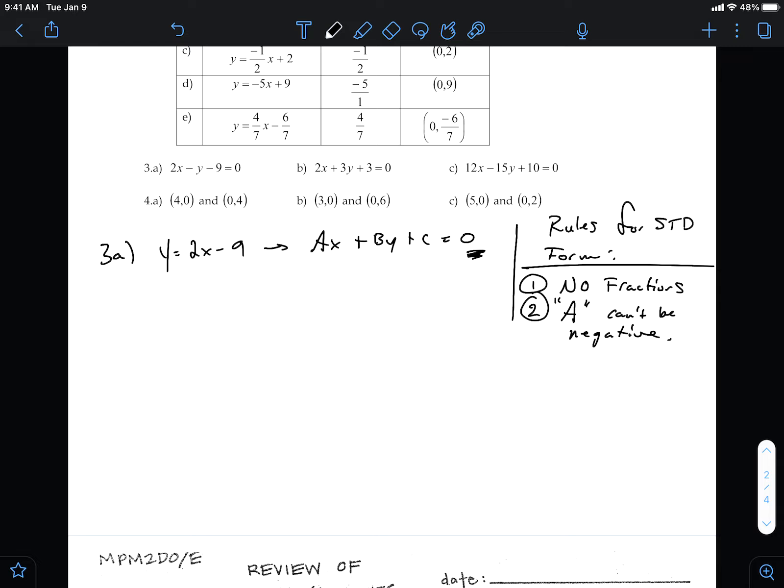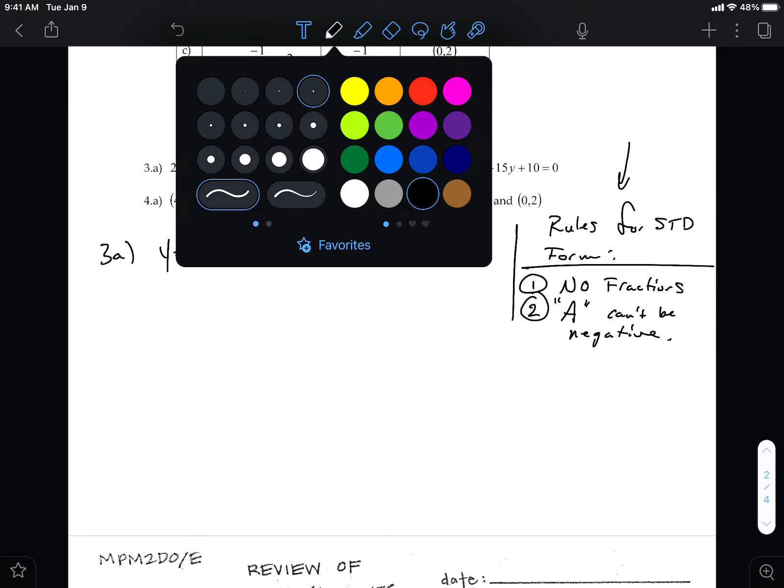But first things first, before you even think about applying, like making sure that you've abided by these rules for standard form, I think the first thing you need to do is get everything to one side. And just do that with zero pairs again.